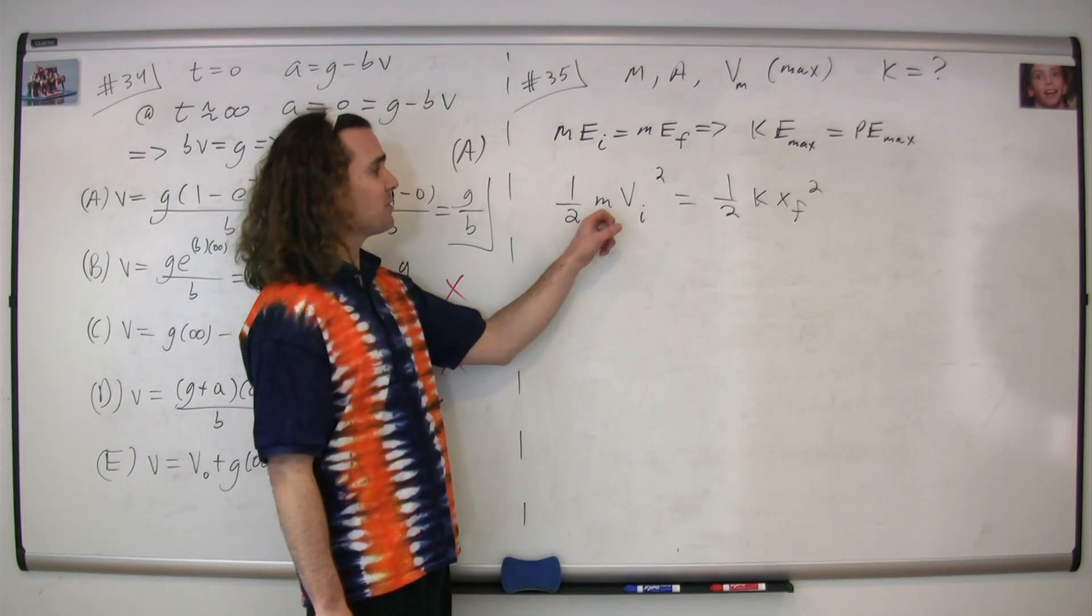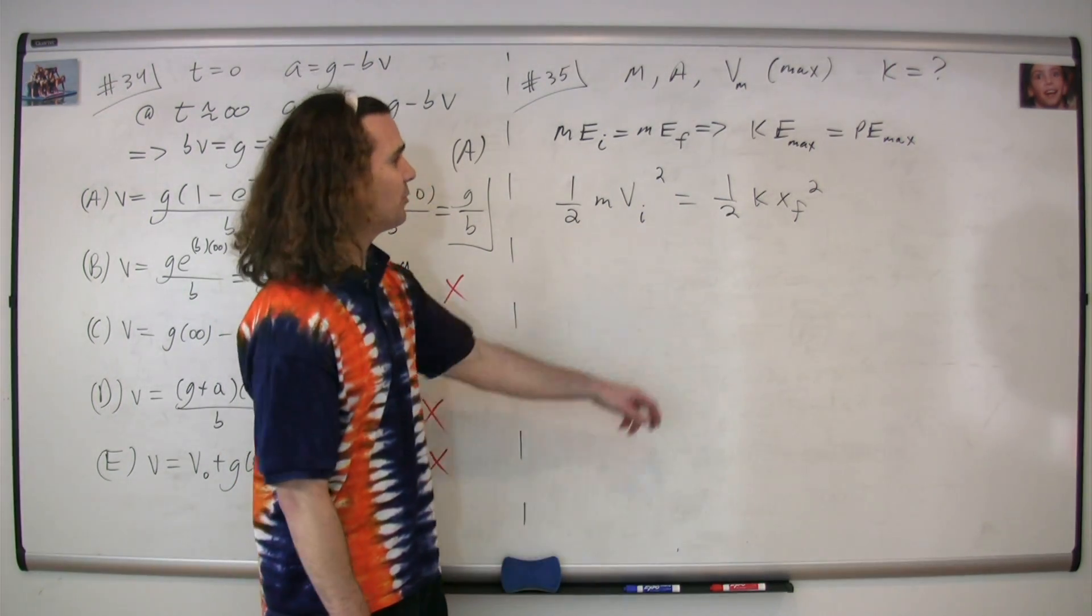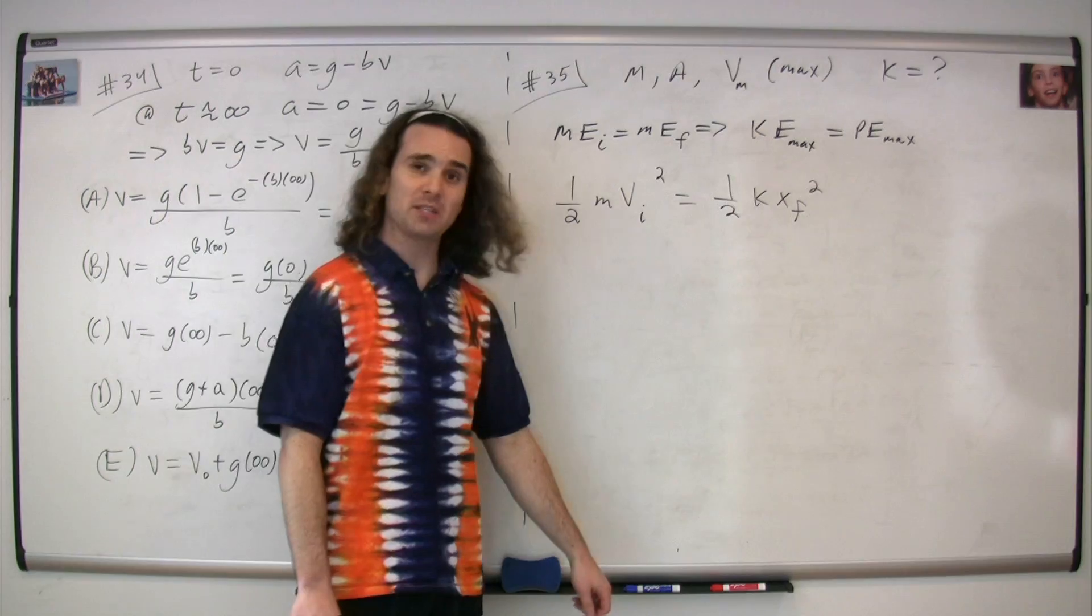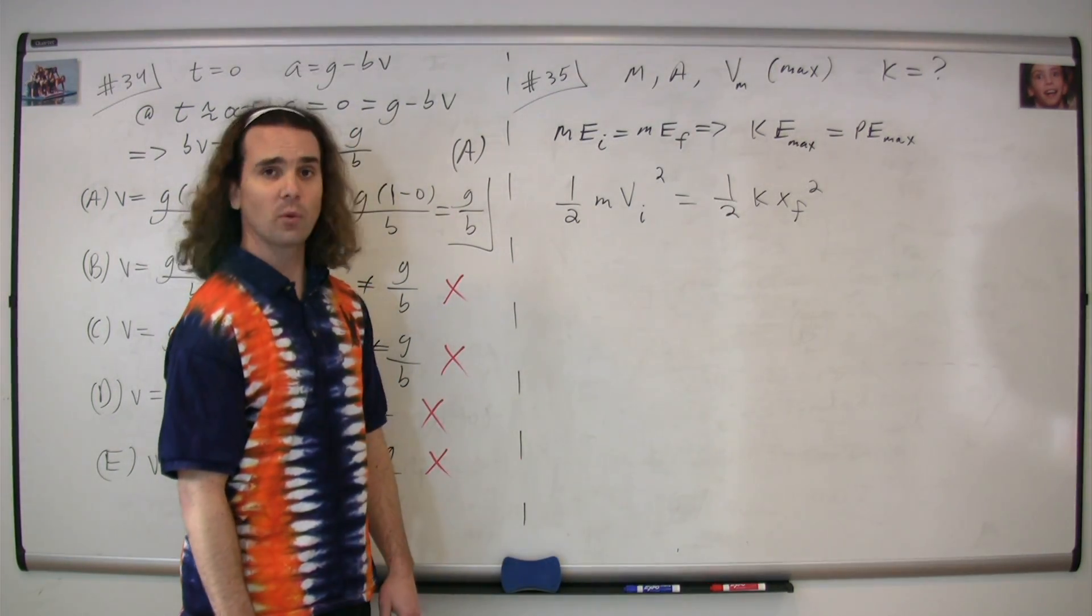Substituting in our equations, we have one half times the mass times the velocity initial squared is equal to one half times the spring constant times the displacement from equilibrium position final squared.